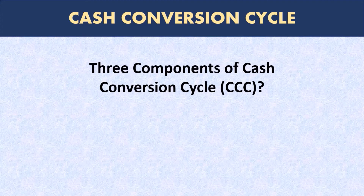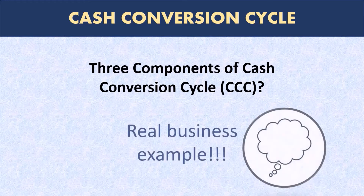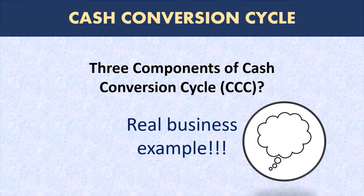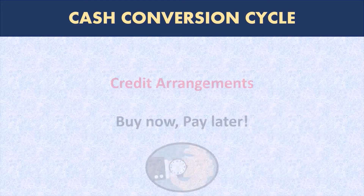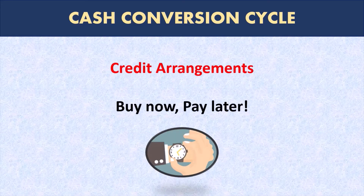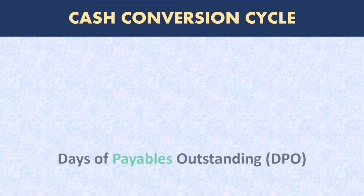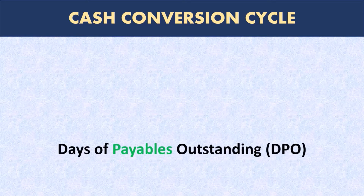The three components of cash conversion cycle. Before we look at the calculation and formula, we need to think about the example of a real business in real life. A business may have more than one product, more than one vendor and customer. Additionally, most businesses have credit arrangements with vendors as well as customers. This means when the business buys from the vendor, it does not have to pay immediately and has a certain number of days from the invoice date — known as credit period — after which the business can pay without any additional charges or penalties. This is calculated as something called days of payables outstanding.